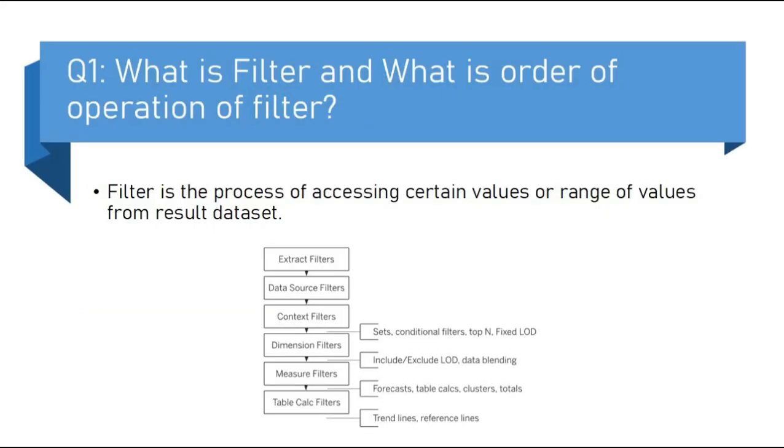The first question is what is filter and what is the order of operation of filter. Filter is the process of accessing certain values or range of values from result data set. For example, suppose we have data of 100 people and we want to see only the data of five people, so for this purpose we use filter.